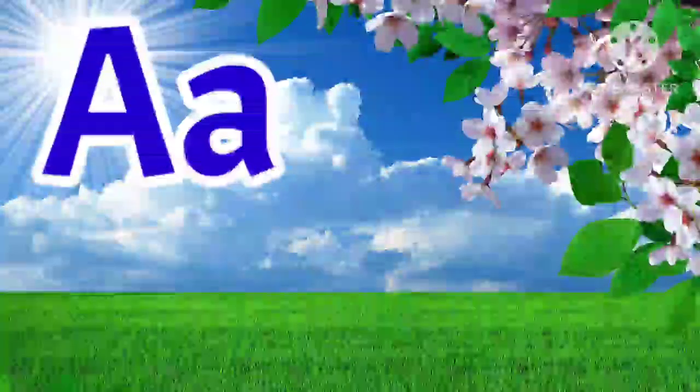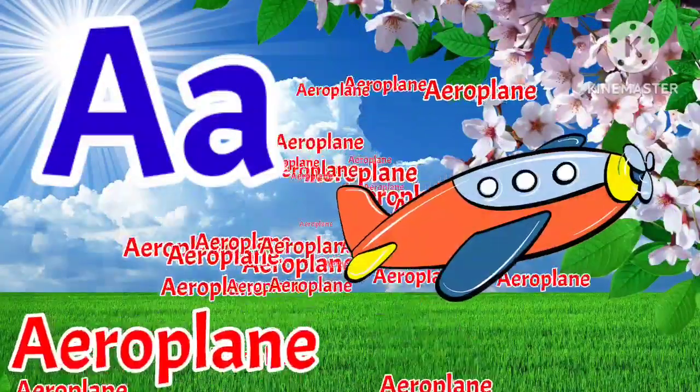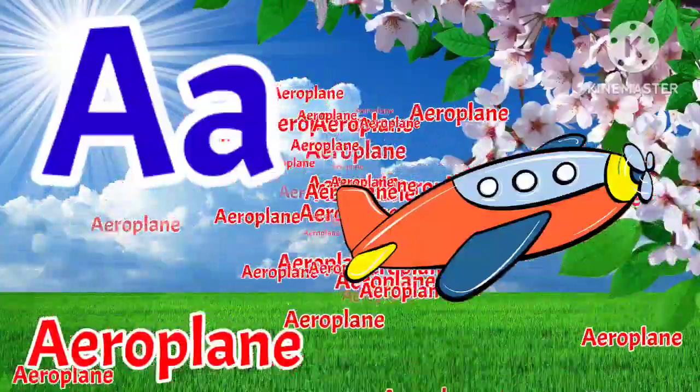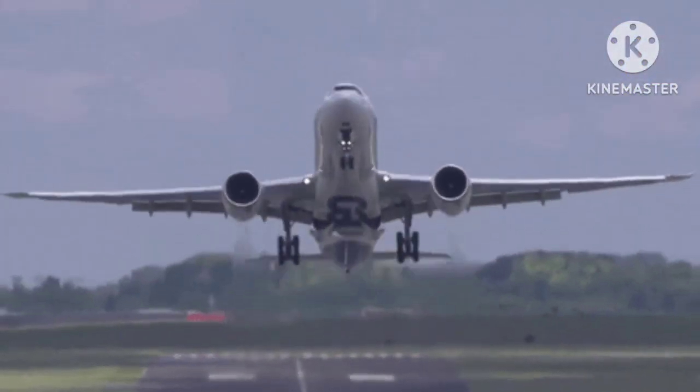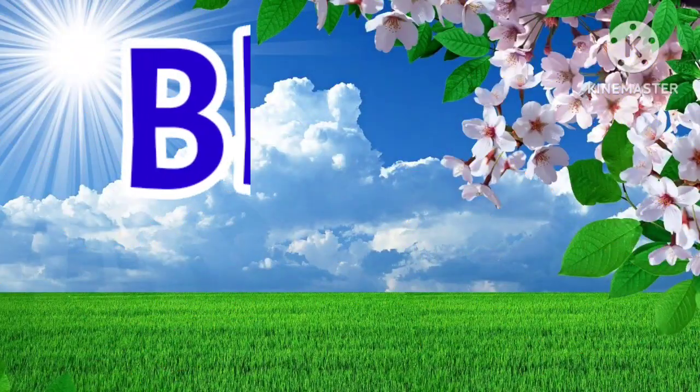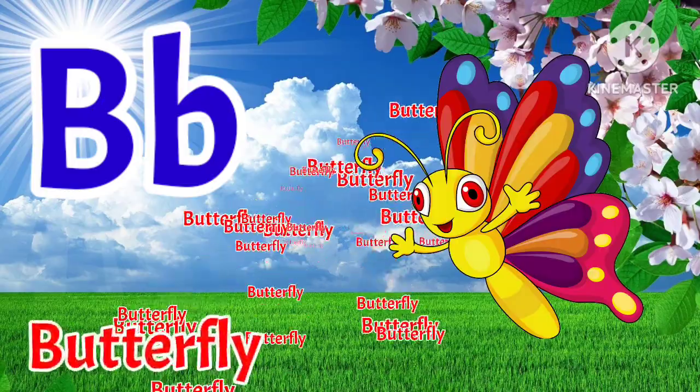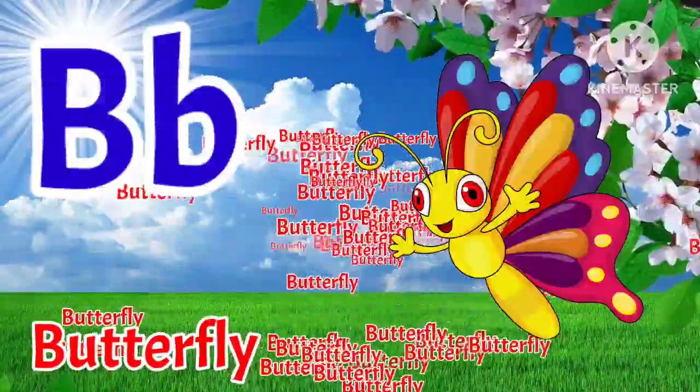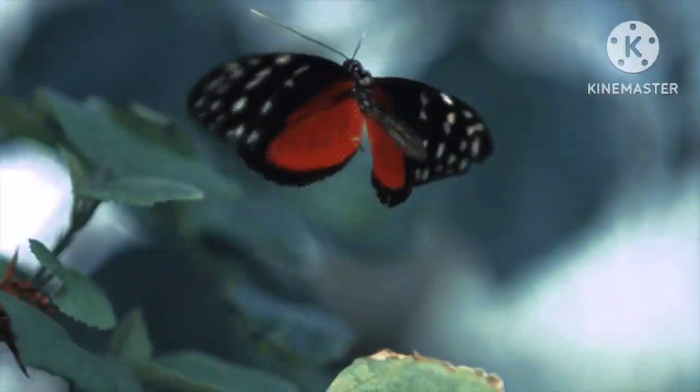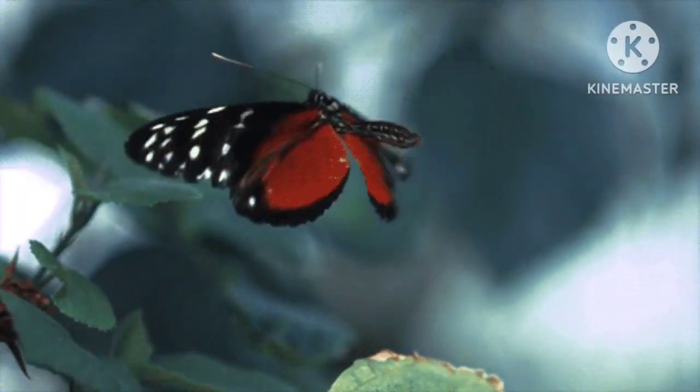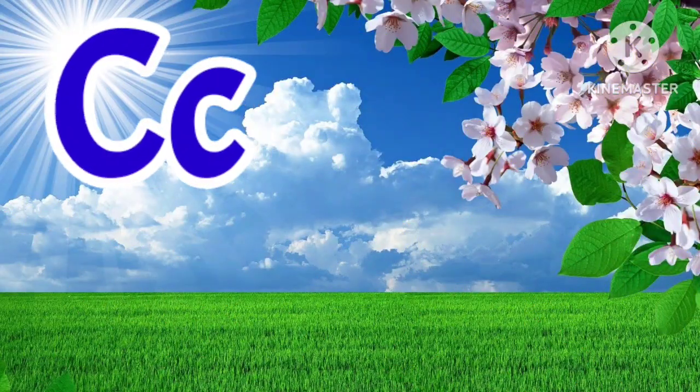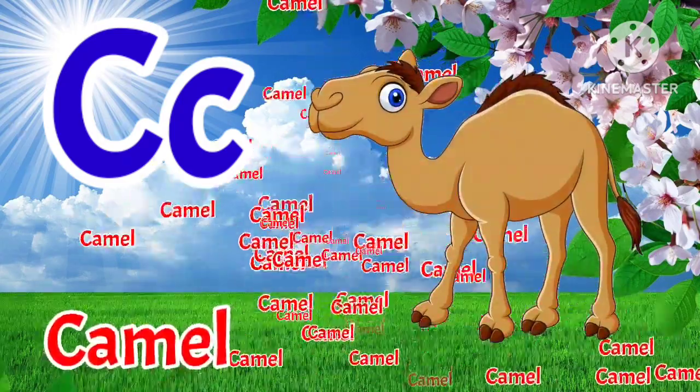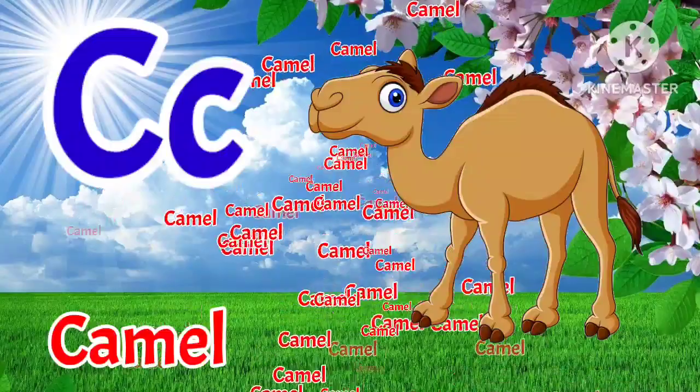A. A is for Aeroplane. A is for Aeroplane. B. B is for Butterfly. B is for Butterfly. C. C is for Camel. C is for Camel.